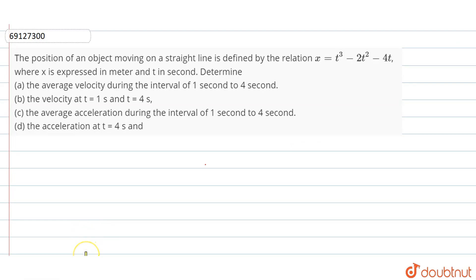Okay, let's ask the first question. The position of an object moving on a straight line is defined by relation x equals t cube minus 2t square minus 4t, where x is expressed in meter and t is in second. Determine the average velocity during the interval of 1 second to 4 seconds.